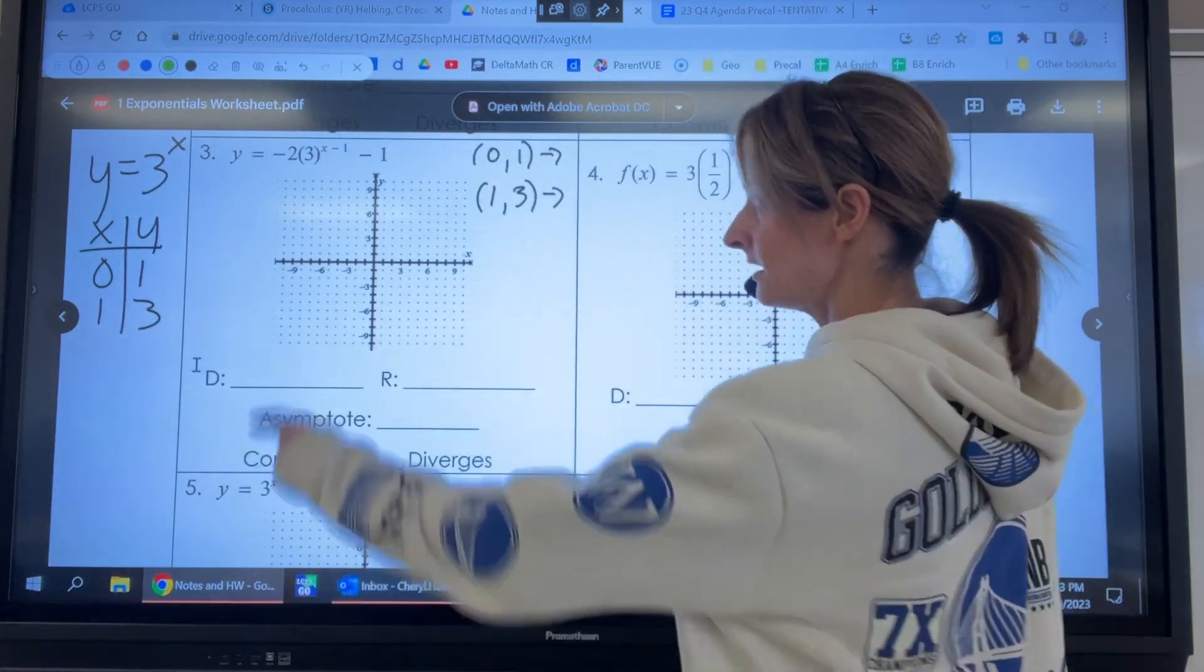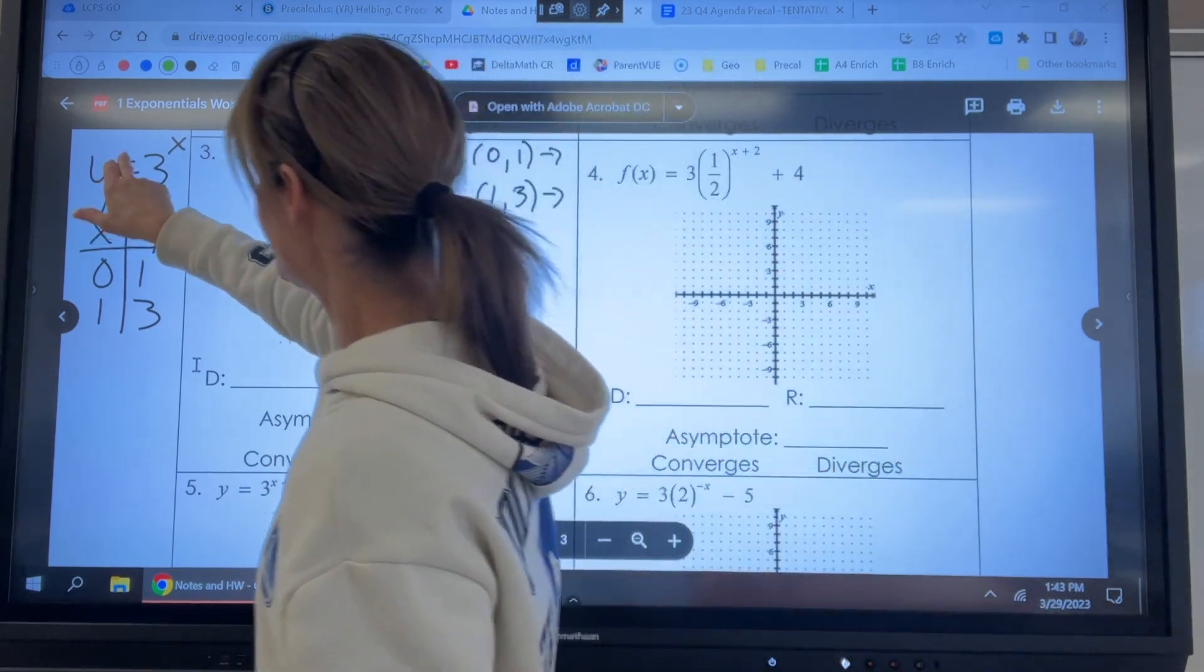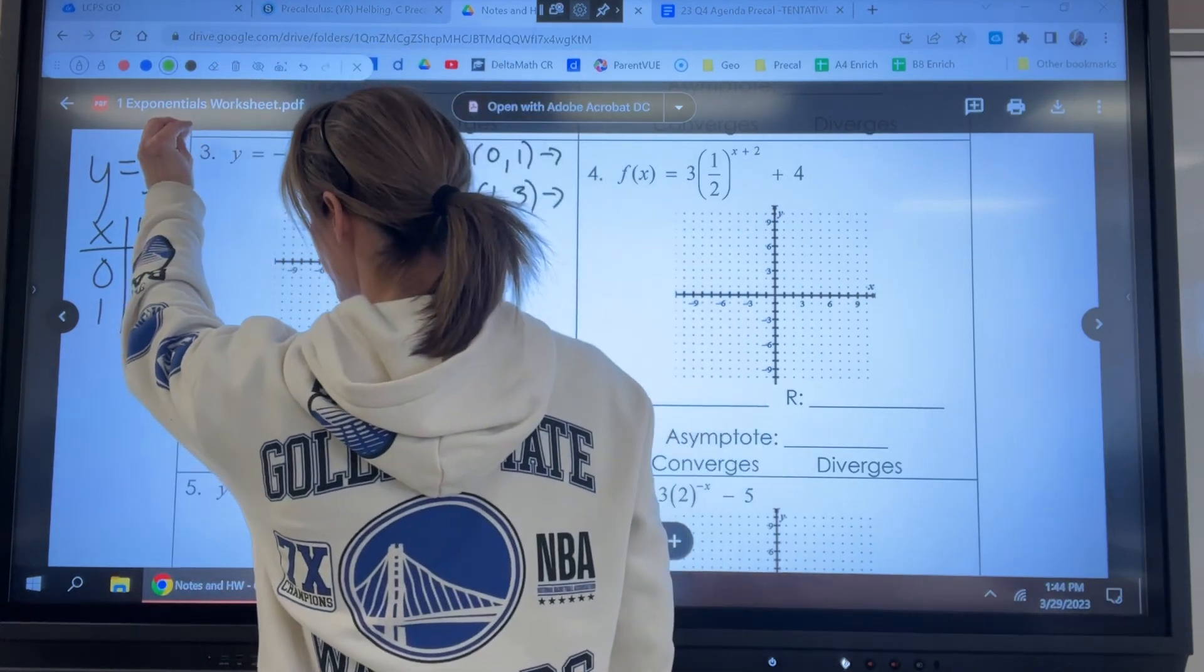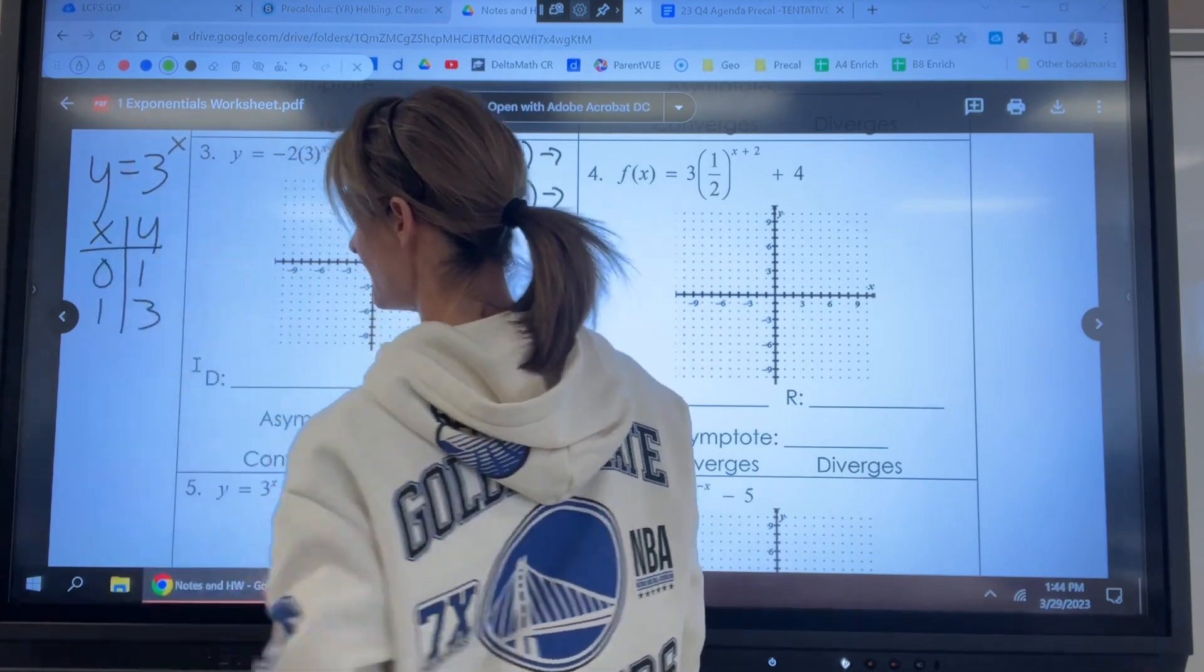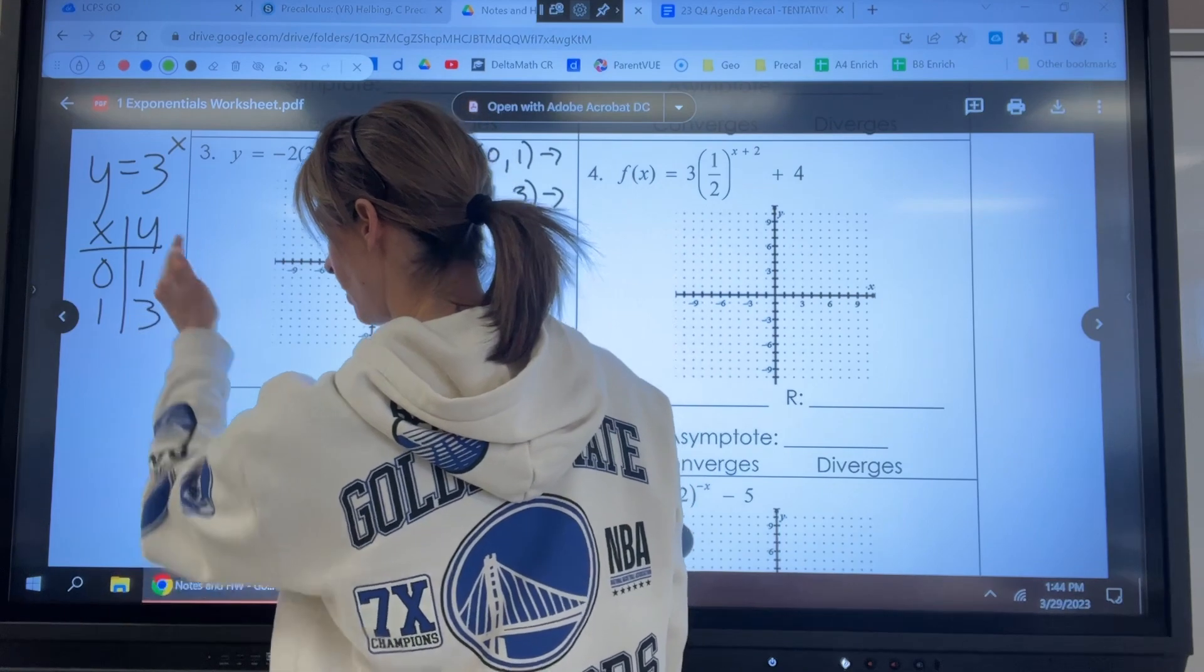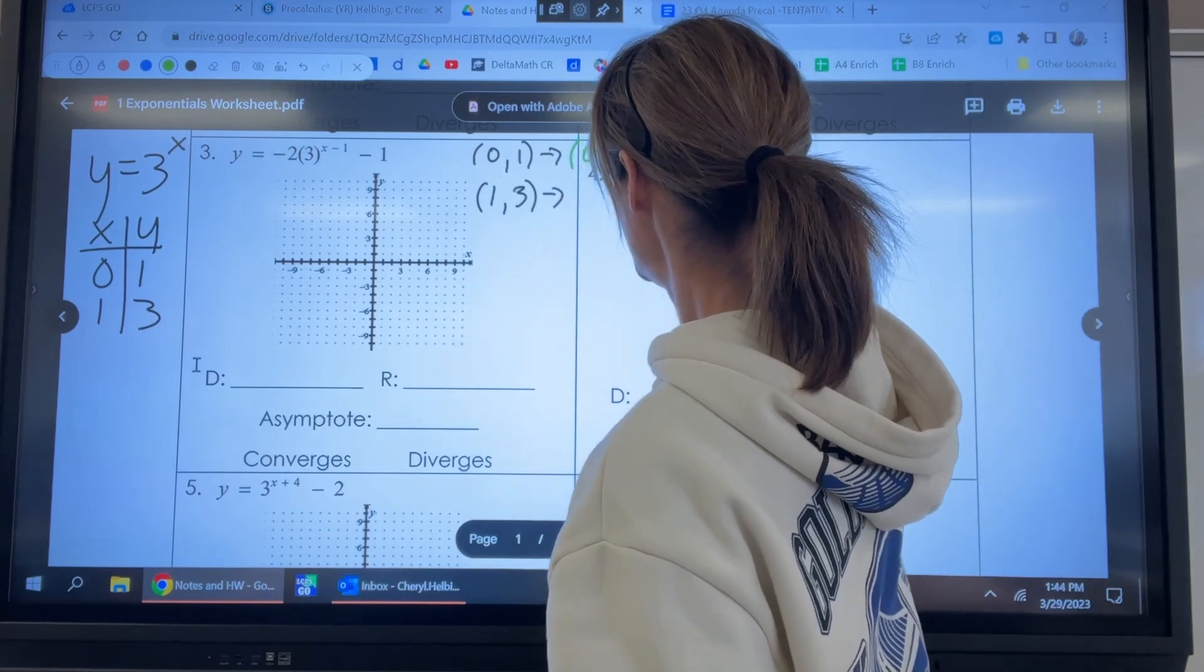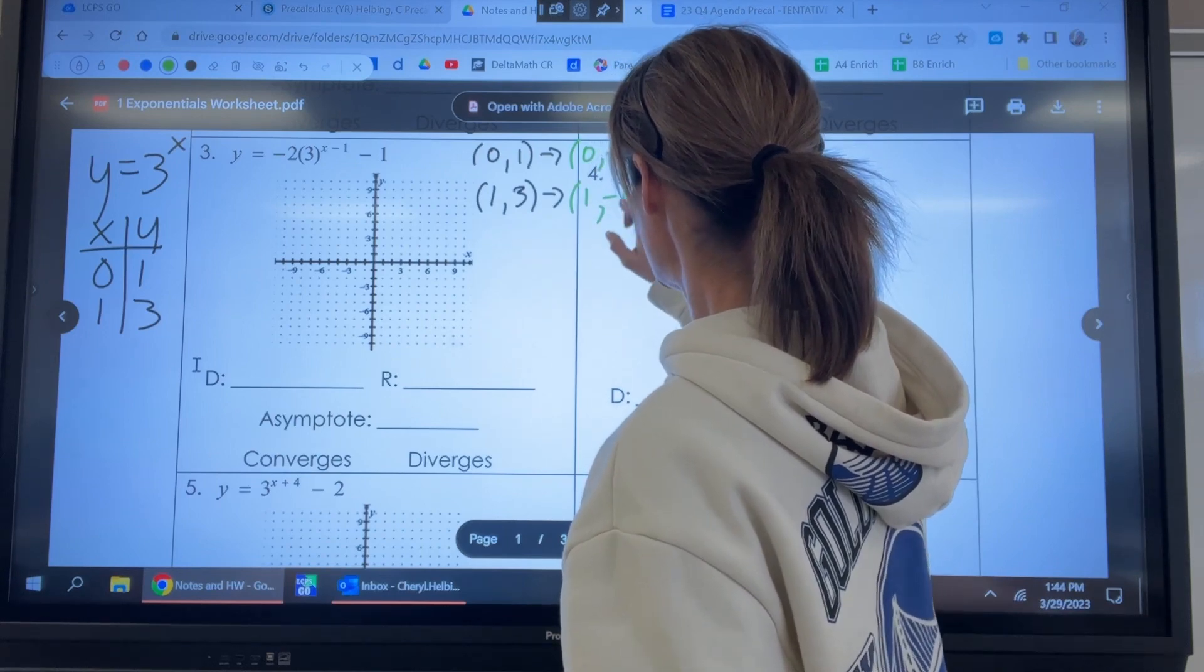So our a is negative two. So if I were to put a negative two in front here, okay, I just multiply this by negative two. If I plug in zero here for x, three to the zero power is still one, but there's a negative two waiting in front of it. So the y values are going to be all multiplied by negative two. So zero, one is going to go to zero, negative two, and one, three is going to go to one, negative six.